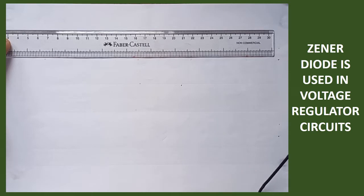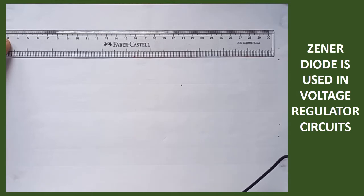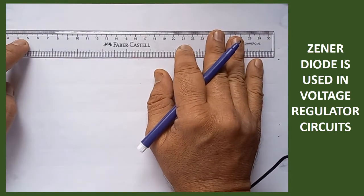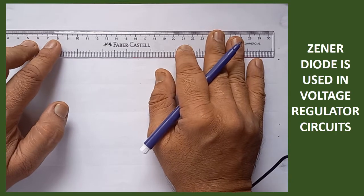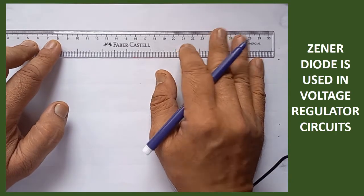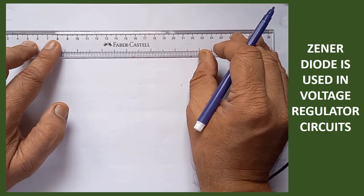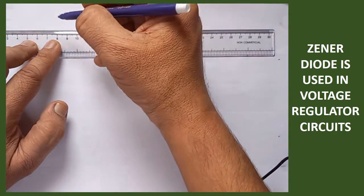Now we are going to learn how the Zener diode plays a vital role in the circuit of a voltage regulator. Here I am going to draw the circuit diagram of the voltage regulator in which the Zener diode is used.